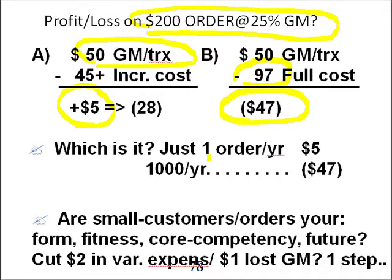It turns out that we don't have one small order per year — we have 1,000 of them or more. And I gave you some statistics on one of my case study turnarounds in 1976.